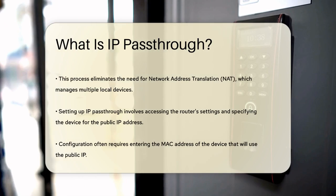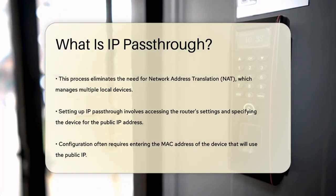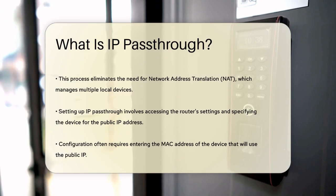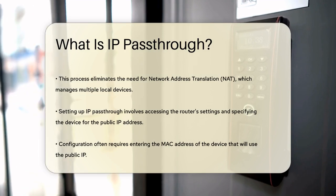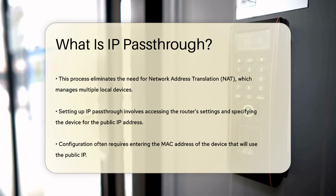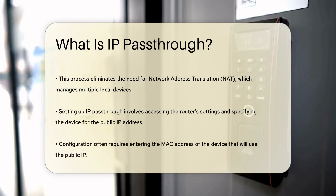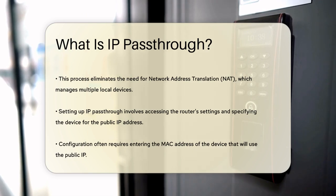Here's how it works. When you enable IP pass-through, the router acts as a bridge, passing the public IP address to the specified device. This device can then communicate directly with the Internet, bypassing the network address translation, NAT, process that usually manages multiple devices on a local network.